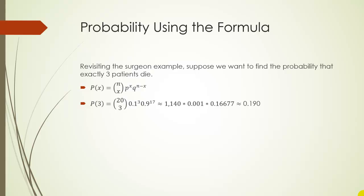This is not my favorite way to do this, because, again, calculators or tables will be faster, but this is how you do it. So we're revisiting our surgeon example. Suppose we want to find the probability that exactly three patients die. So we know our numbers from before. N is 20. X is 3. P is 0.1. Q is 0.9.